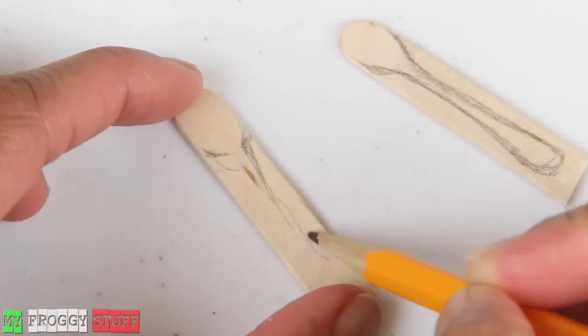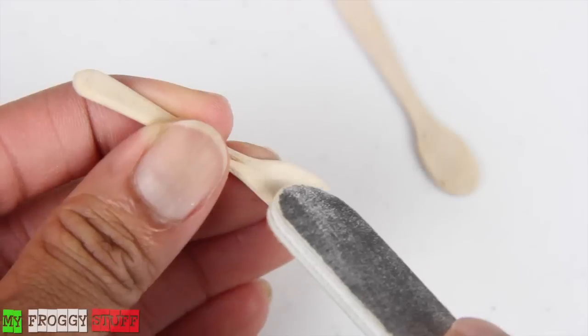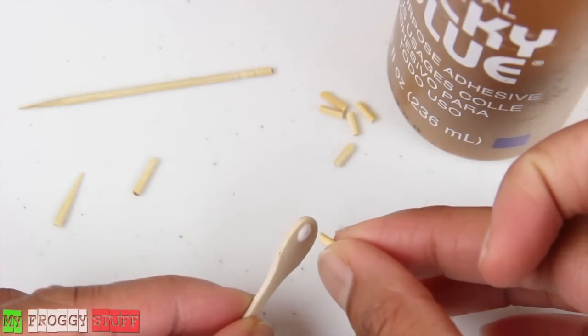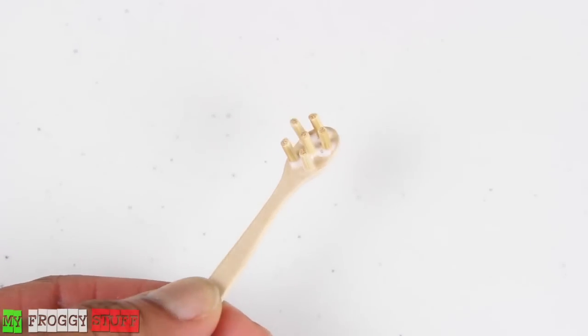Sketch the outline of a spoon on popsicle sticks cut down to size, then sand it with a nail file, making a small dip in one for a spoon. Glue cut pieces of a toothpick to the other to make a pasta scoop.